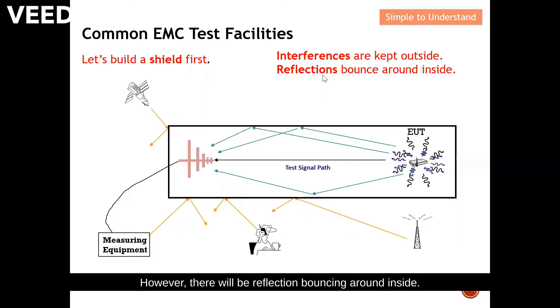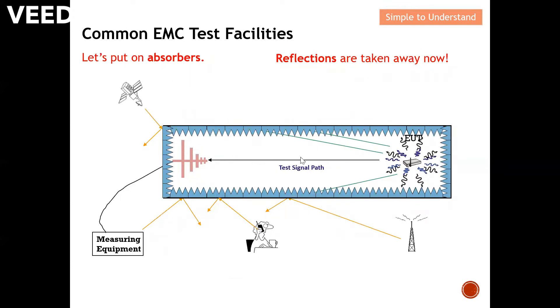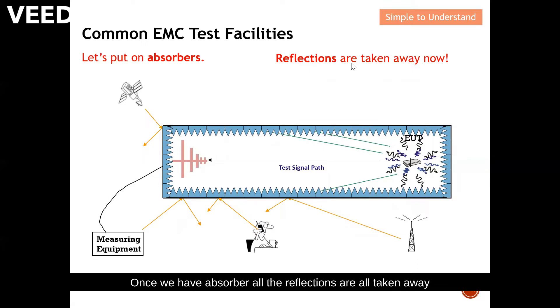However, there will still be reflections bouncing around inside. You can see from here there will be even more reflections occur. So next, what we can do is we put on absorbers. Once we have absorbers, all the reflections are all taken away, and now what we have is basically the DUT direct path all the way to the antenna.